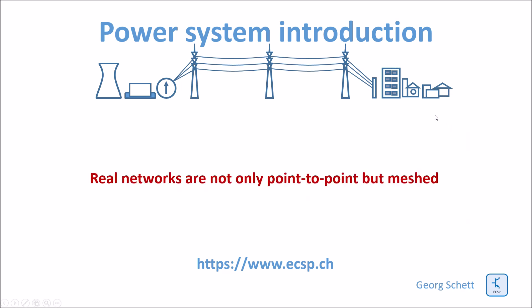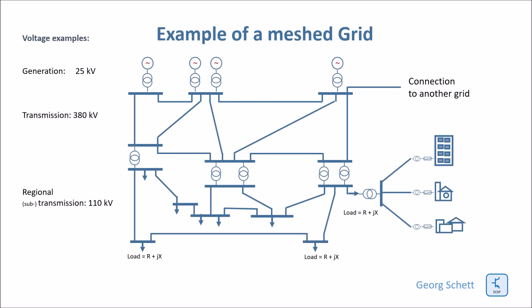A real power grid is not just a point-to-point transmission line but a mesh network. Here is an example of such a transmission system: you have all the power generation, then a transmission grid — in this case 380 kV — connections to adjacent grids, then the sub-transmission regional transmission network, and then substations where power is distributed to individual loads through a medium voltage network.